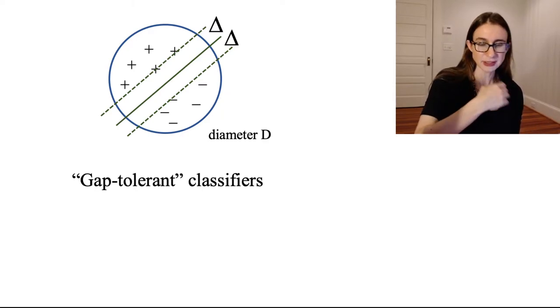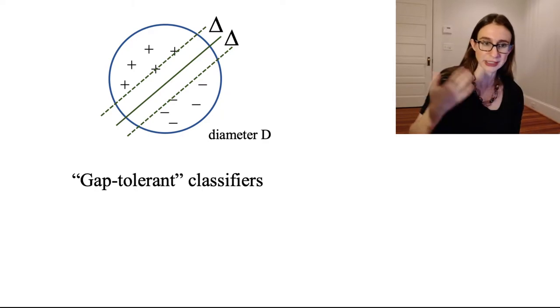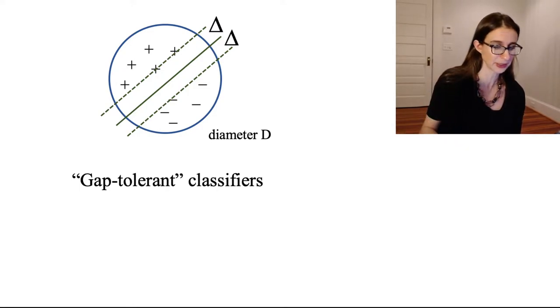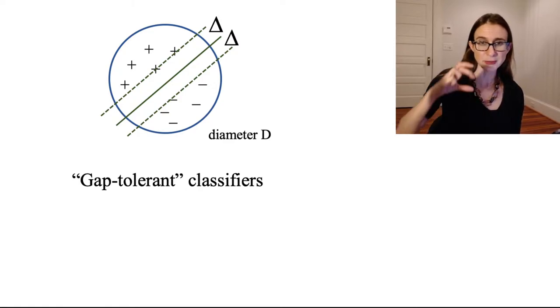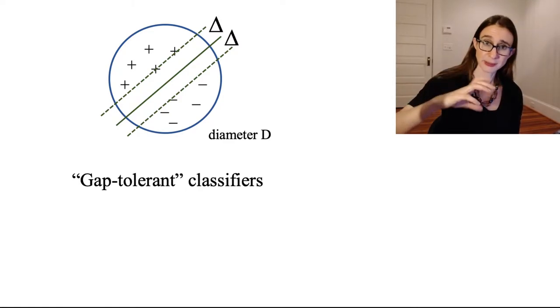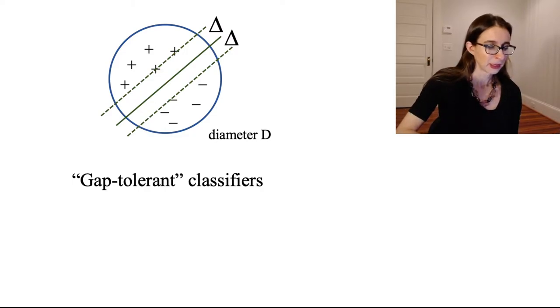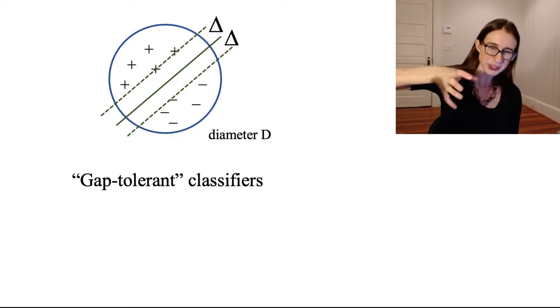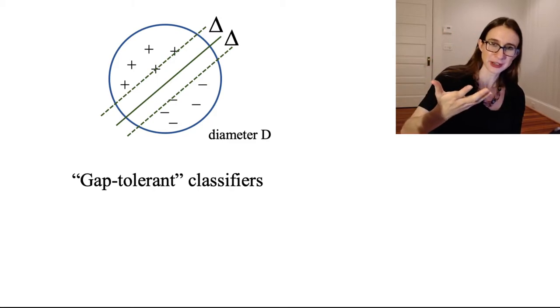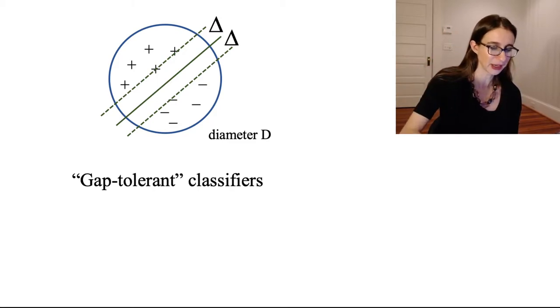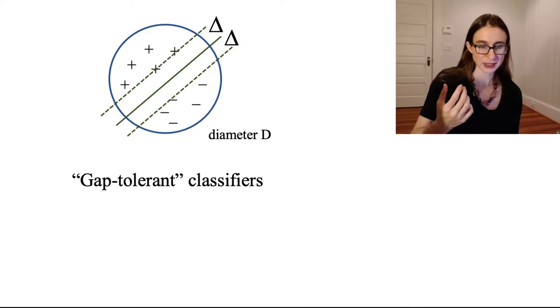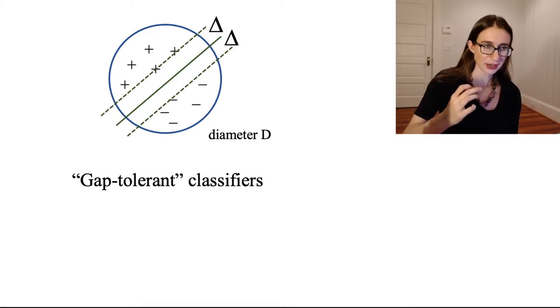In any case, he defines a set of linear classifiers that are called gap-tolerant classifiers. I'm not going to define them precisely because it gets really complicated. These gap-tolerant classifiers require a margin of delta between points of opposite classes, and the points are also forced to live in a ball of diameter D. So the class of functions is fairly limited since they not only need to classify the points correctly with this margin of delta,